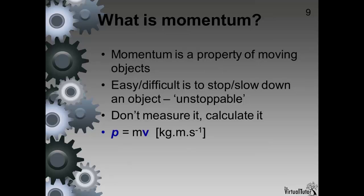Momentum is the product of an object's mass and its velocity. The symbol for momentum is an italic letter P.